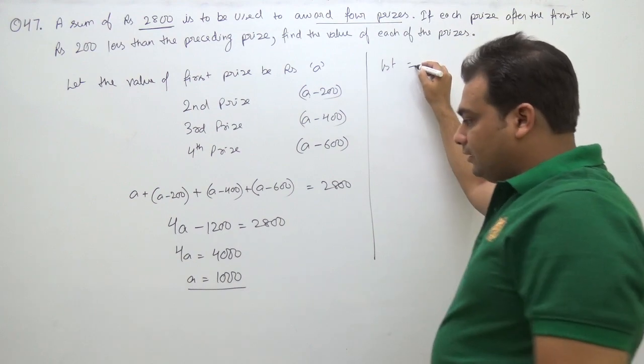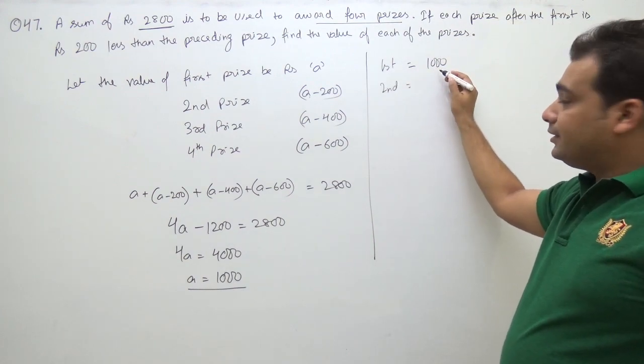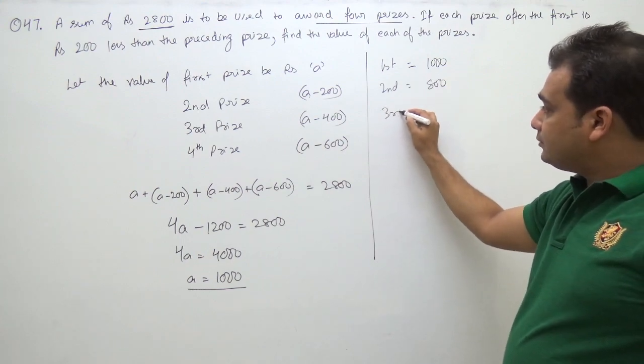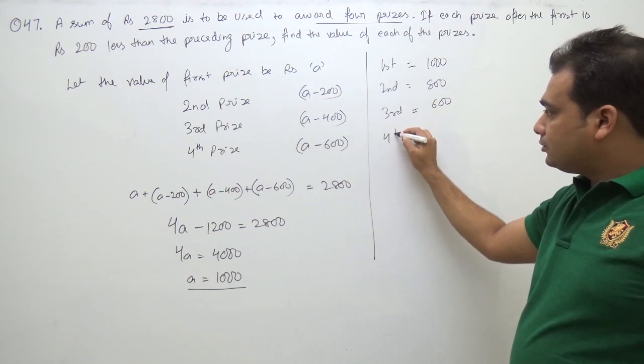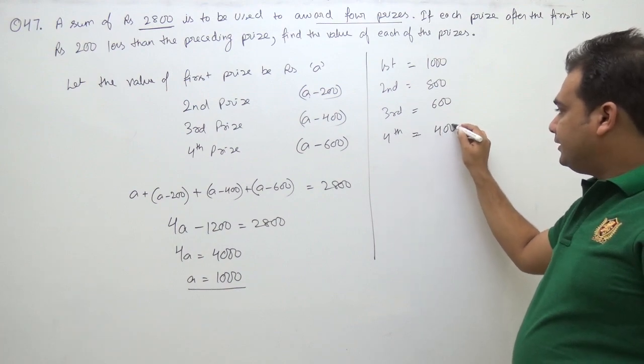So the first prize is Rs. 1000. The second prize is 200 less, which is Rs. 800. The third prize is 200 less than that, which is Rs. 600. And the fourth prize is Rs. 400.